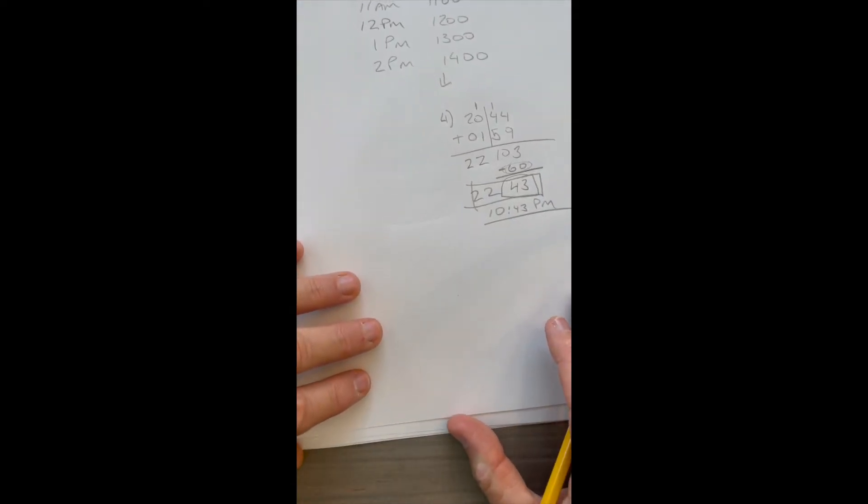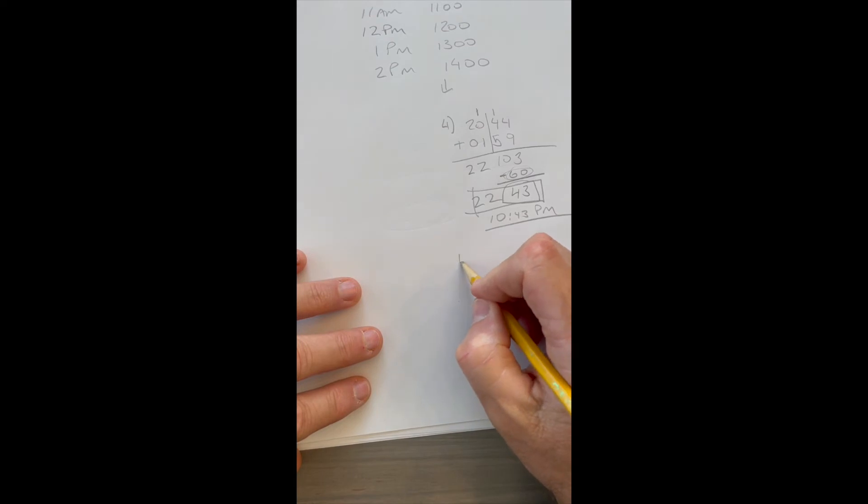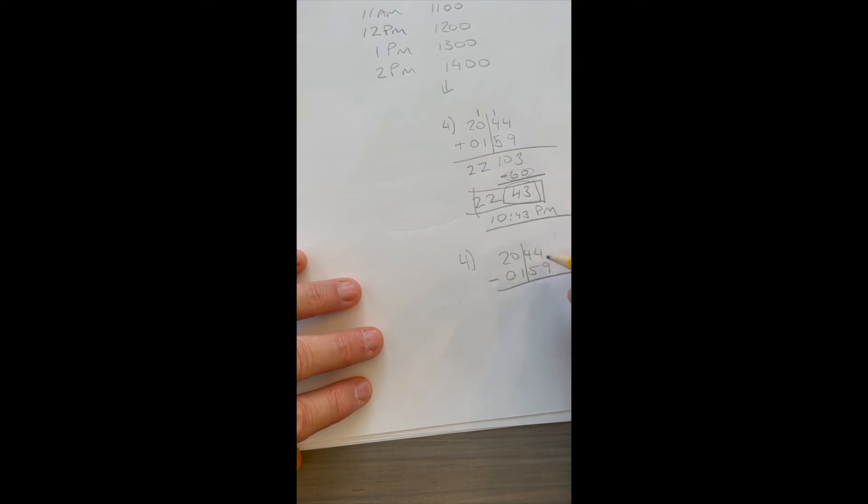Subtracting. Same problem number four in the subtracting section from your textbook: 2044 subtract one hour and 59 minutes. Divide my minutes and hours. I can't subtract 59 from 44, so now I'm gonna borrow an hour from my hour side. It's gonna make this 104 minutes.